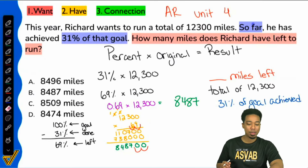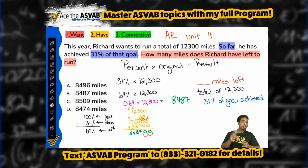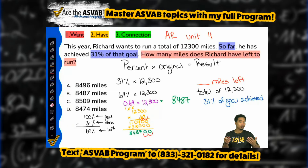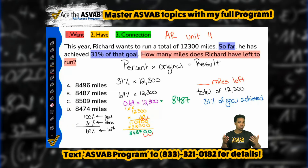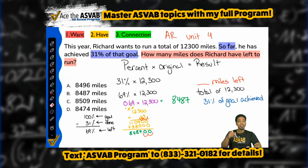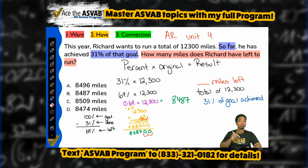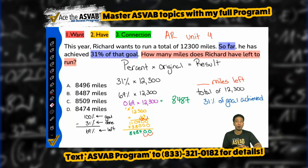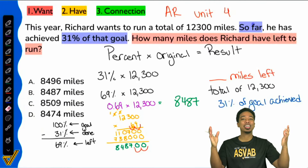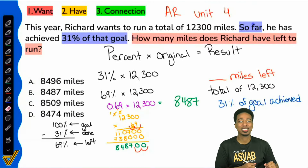Don't forget: if you are in the program, it's arithmetic reasoning unit four. If you're interested in raising your score without all the stress — just having everything lined up for you — go ahead and check out the program. You can text that number right there, or check the link in the description of this video. Have a great day, love y'all, and I'll see you in the next class. Cheers.